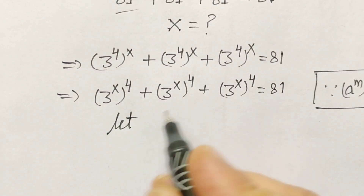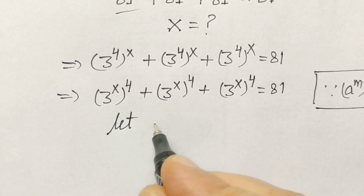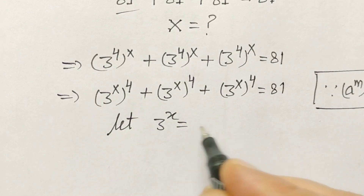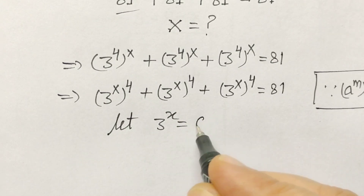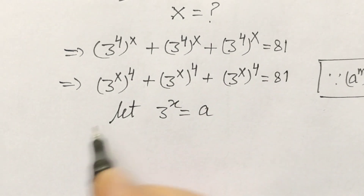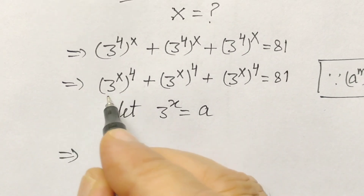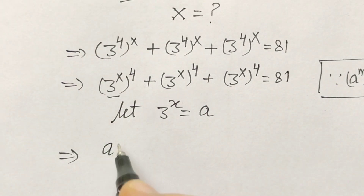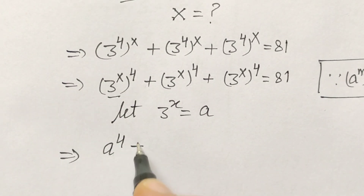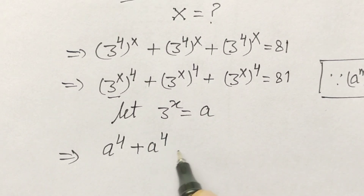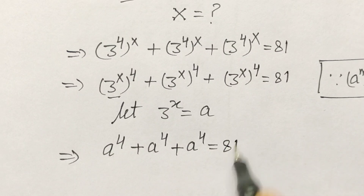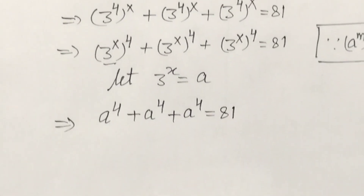So let 3 to the power x equal a. Then we can write this as a to the power 4 plus a to the power 4 plus a to the power 4 equals 81.